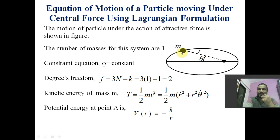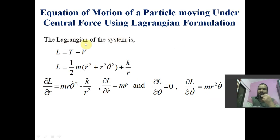The potential energy at point A is phi equal to minus k by r. That is, the potential energy at this point of the mass is V(r) equal to minus k upon r. The Lagrangian of the system is given by L equal to T minus V, so L is one half m times r-dot squared plus r squared theta-dot squared, plus k by r, since minus V of minus k by r becomes plus k by r.